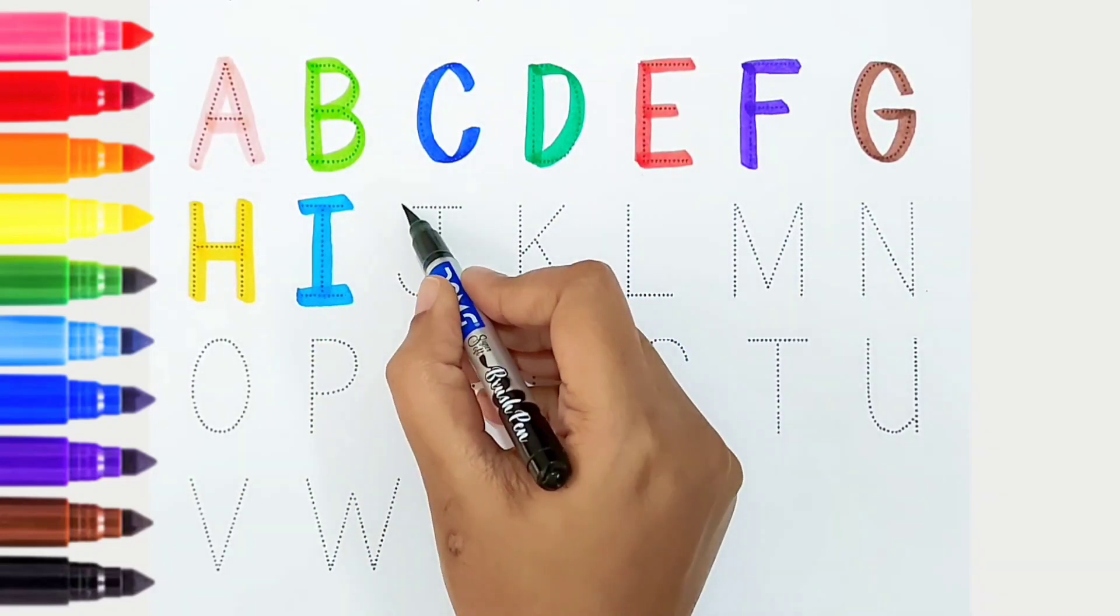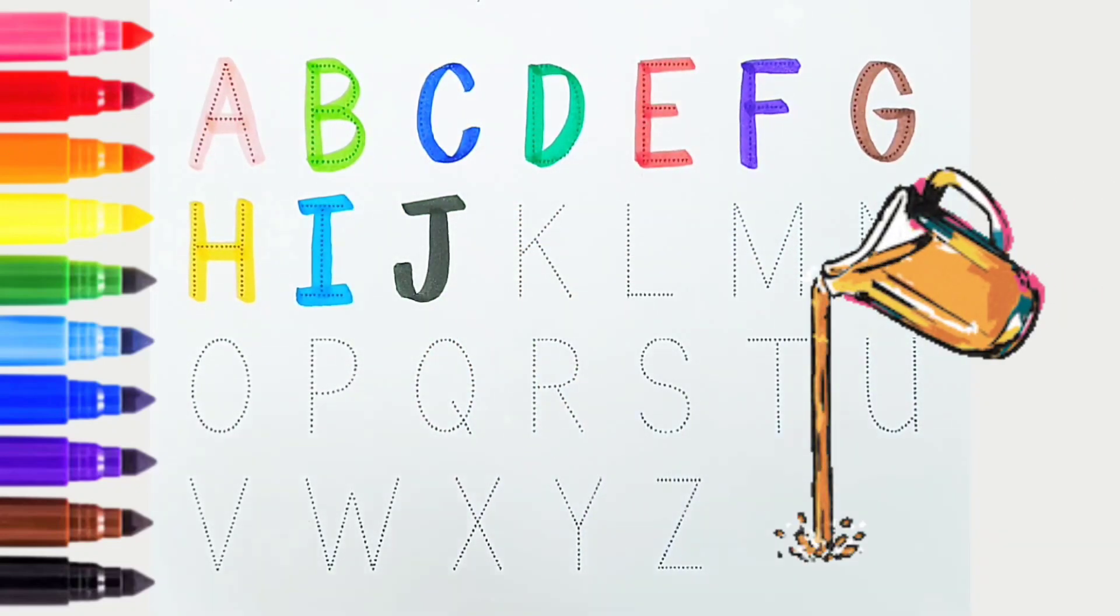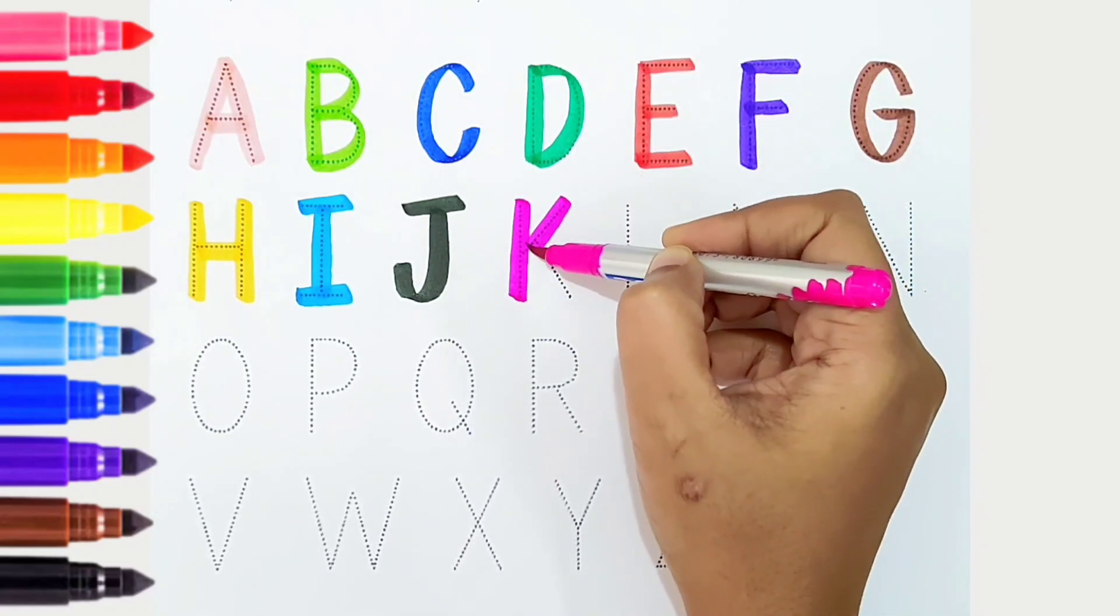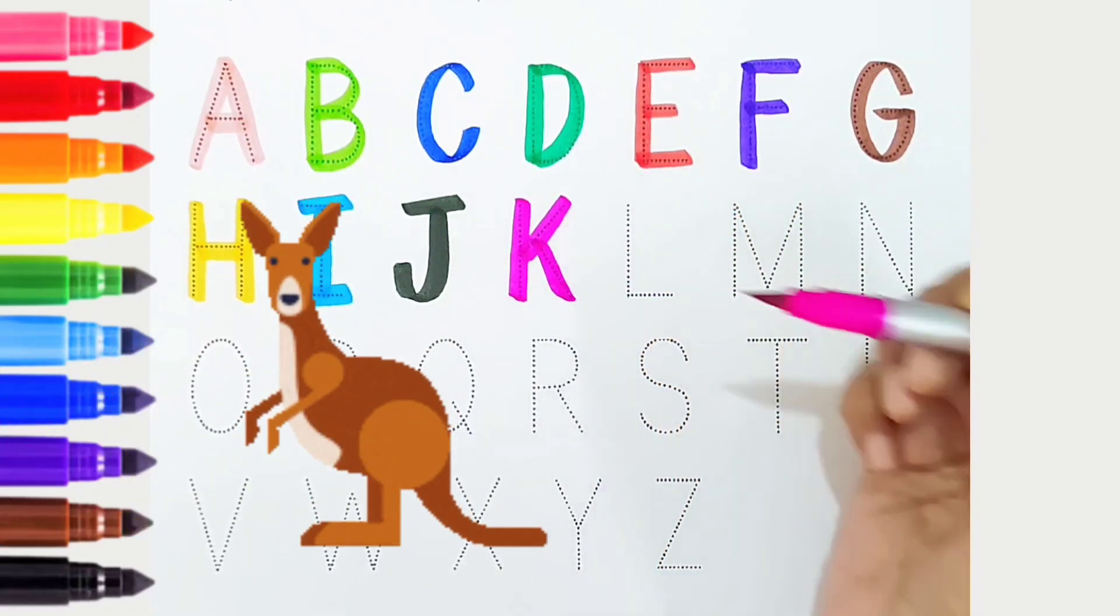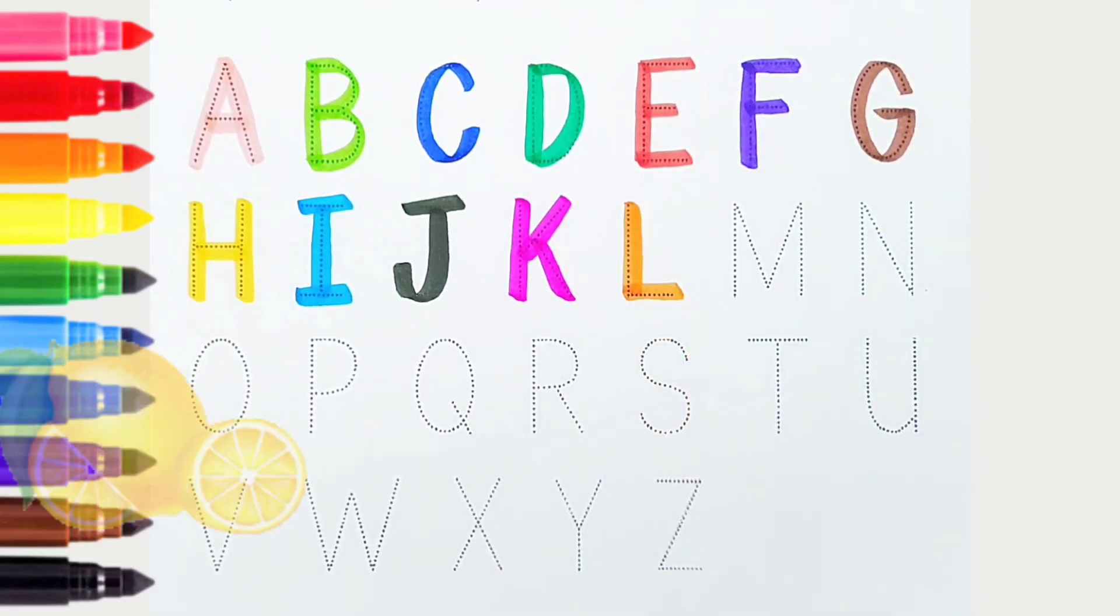J, black color, J is for jag. K, dark pink color, K is for kangaroo. L, orange color, L is for lemon.